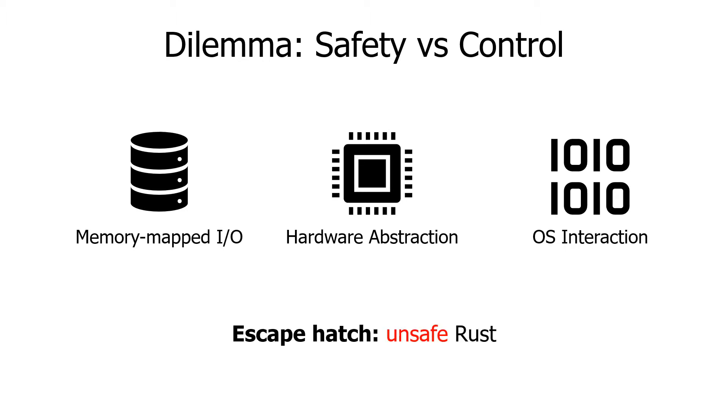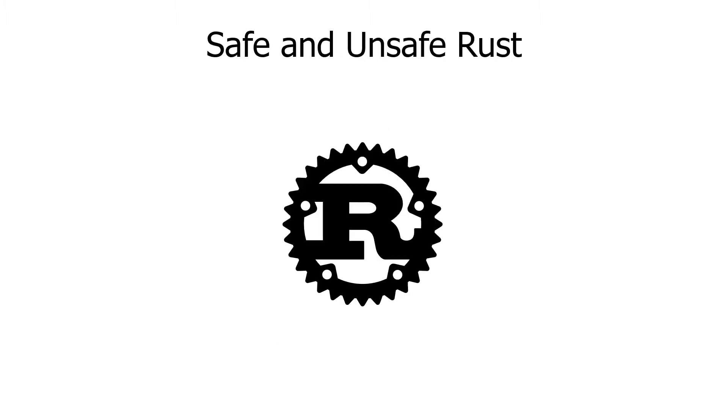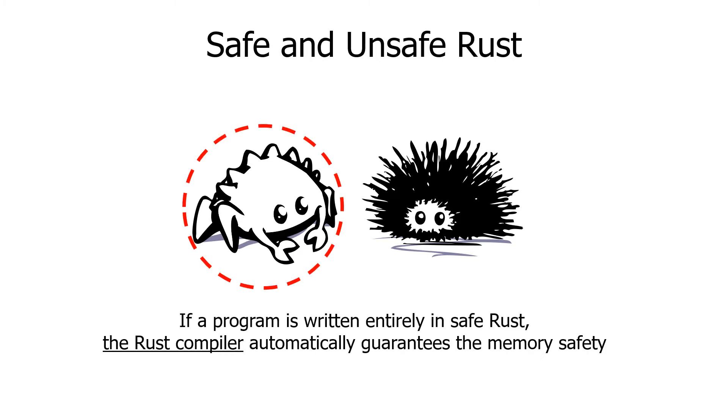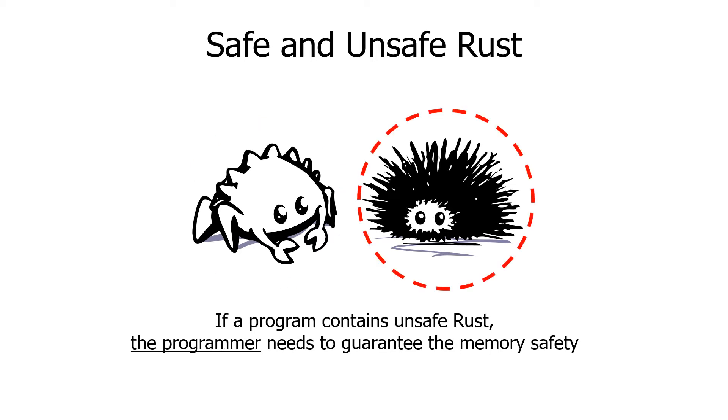To allow these operations, Rust provides an escape hatch called unsafe Rust. Rust consists of two parts: safe Rust and unsafe Rust. When a program is written entirely in safe Rust, the Rust compiler automatically guarantees the memory safety of the program. On the other hand, Rust allows programmers to perform certain low-level operations that are not guaranteed to be safe with unsafe Rust.